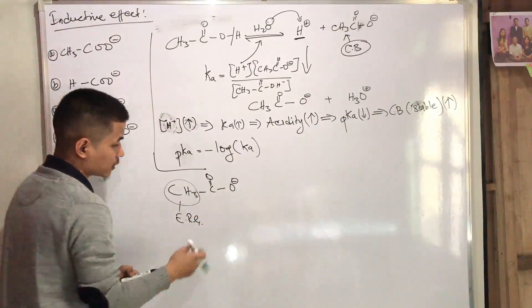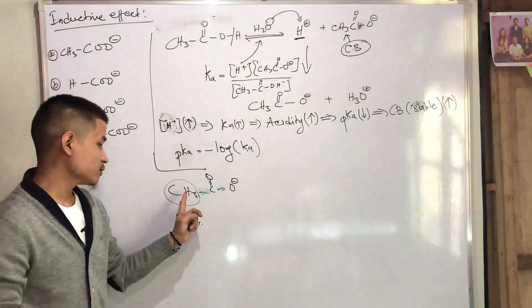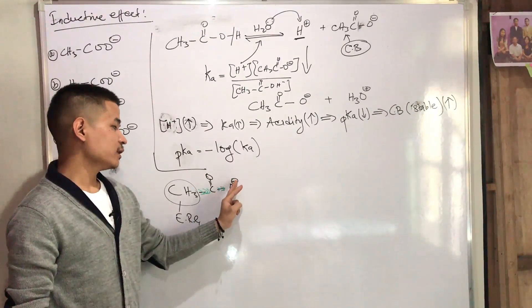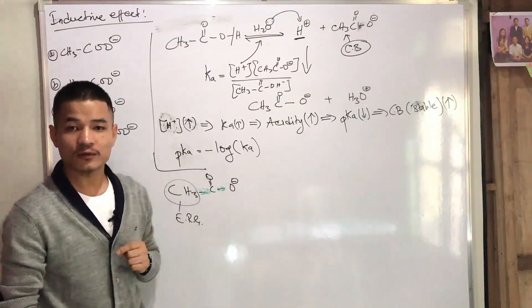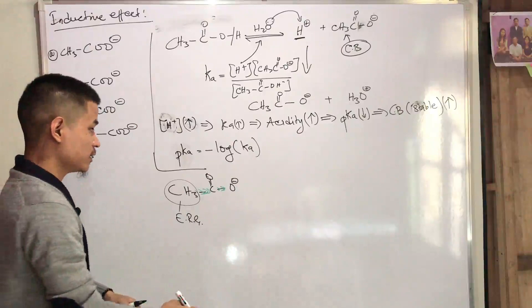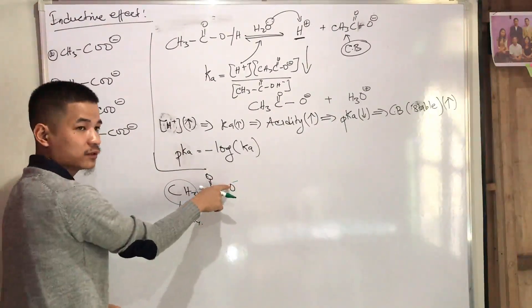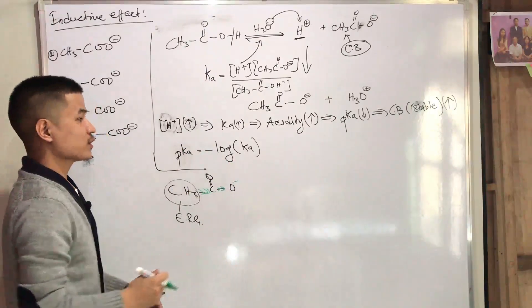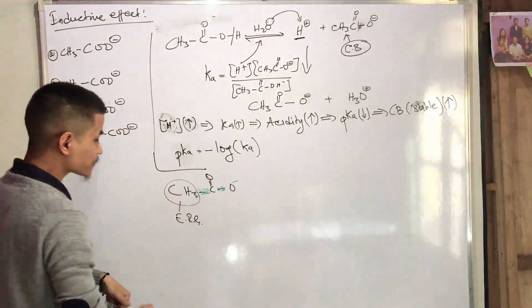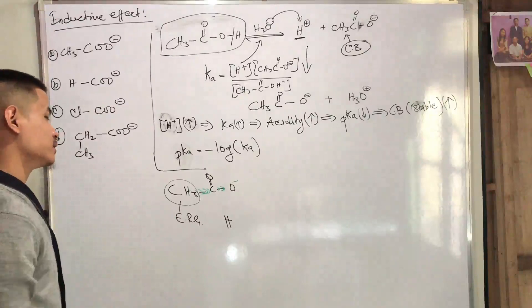This is the electron-releasing group. The electron is released and pushed. This is an oxygen series — it will increase oxygen with the electrons, making the electrons more negative. The electrons are stable if you think the electrons are negative. That is an electron-releasing group, which is unstable and stable.